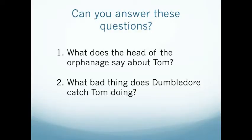In a moment, you're going to watch a scene from the film Harry Potter and the Half-Blood Prince. Harry Potter uses Dumbledore's memory to explore Lord Voldemort's past. As you watch this scene, think about these two questions: What things does the head of the orphanage say about Tom? And what bad thing does Dumbledore catch Tom doing?